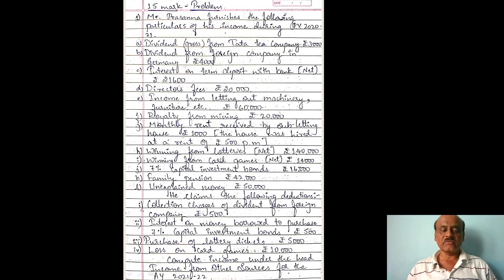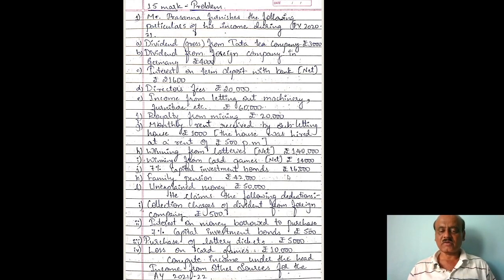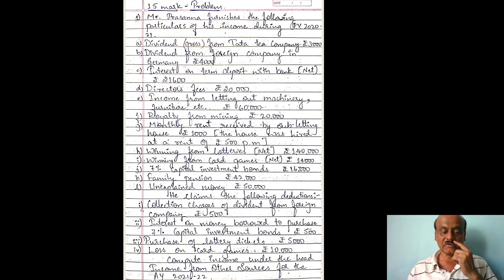Winnings from lottery — this is the gross amount. Winnings from card game — this is also the gross amount. 7% capital investment bond is exempted. Then family pension: Rs. 42,000.